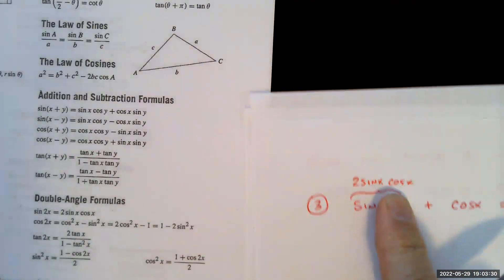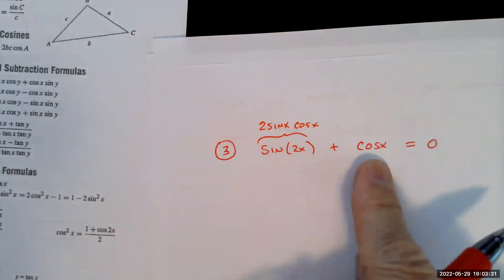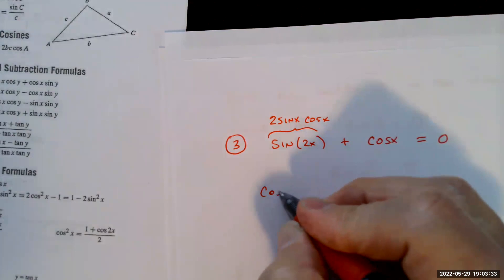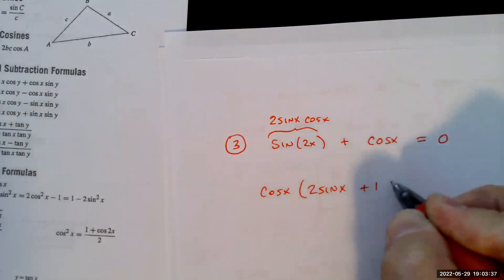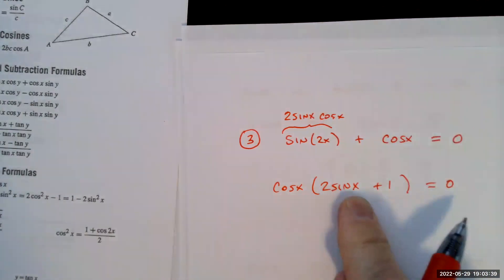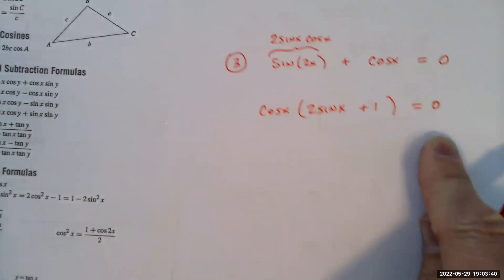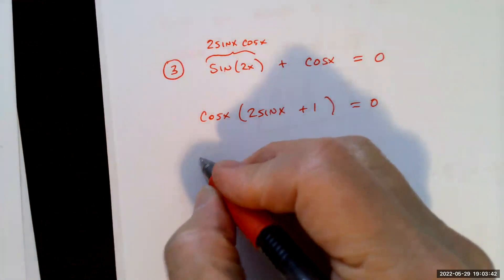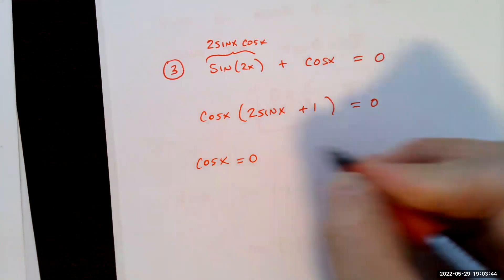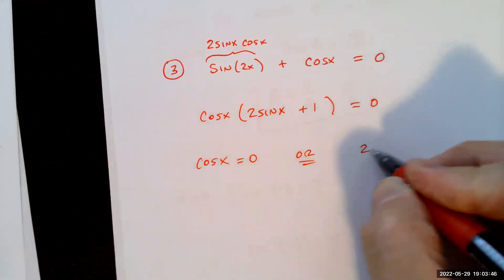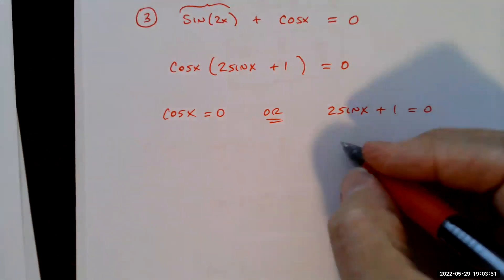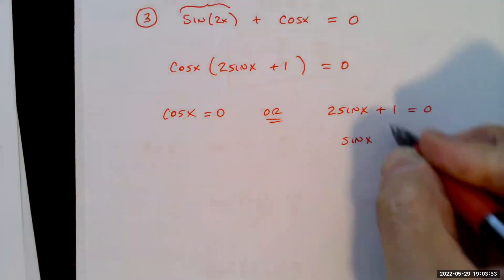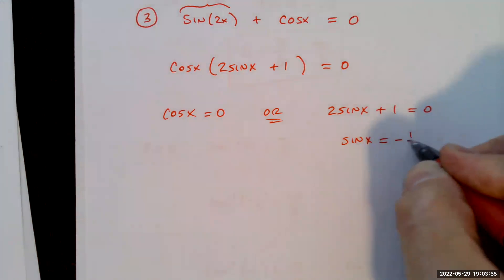Now I can factor out cos(x), leaving cos(x)(2sin(x) + 1) = 0. I have a product of two things equal to zero, so either cos(x) = 0 or 2sin(x) + 1 = 0, meaning sine of x equals negative 1/2.